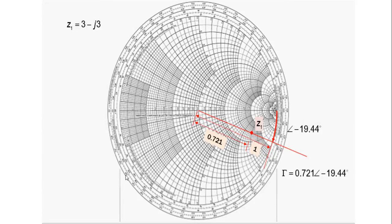This is an example of reflection coefficient where Z1 equals 3 minus j3. The angle theta is minus 19.44 degrees and the length r is 0.721. So the magnitude of reflection coefficient equals 0.721 at an angle of minus 19.44 degrees.